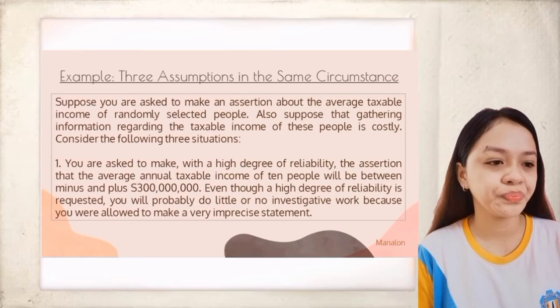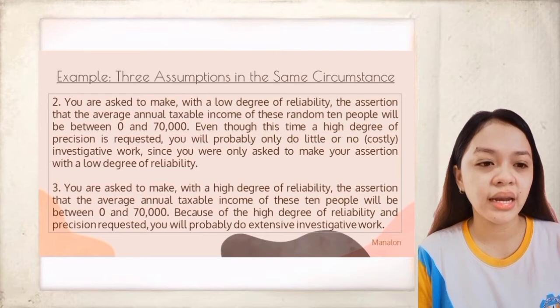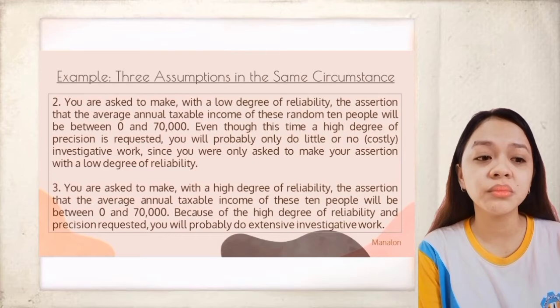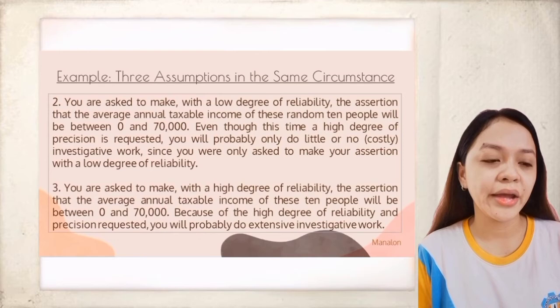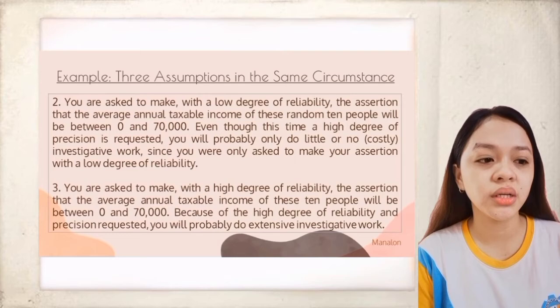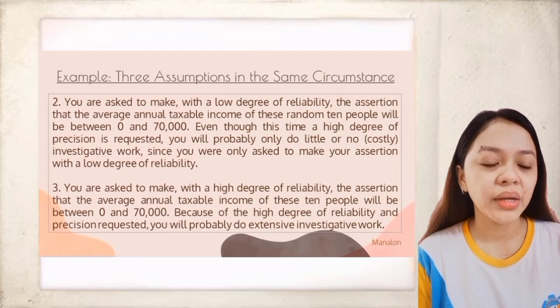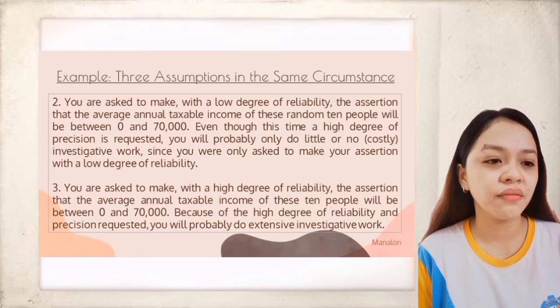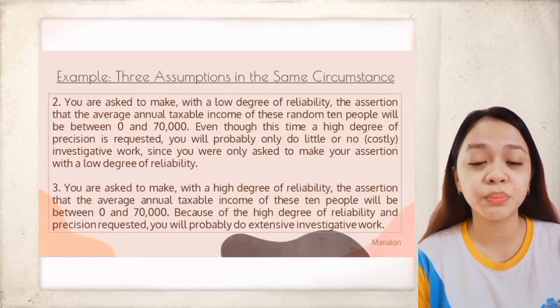In the second situation, you are asked to make, with a low degree of reliability, the assertion that the average annual taxable income of 10 people will be between $0 and $70,000. Even though high precision is requested, you will probably do little or no investigative work since you are only asked to make the assertion with a low degree of reliability. This is the opposite of the first situation — a low audit risk level means the procedures are not demanding even if materiality tolerance is low.